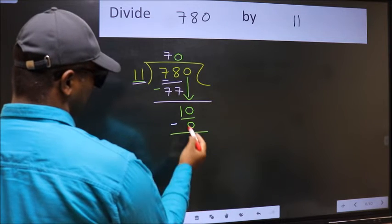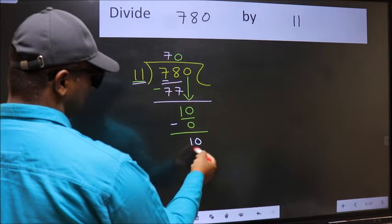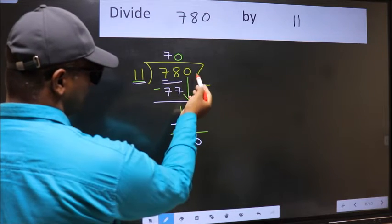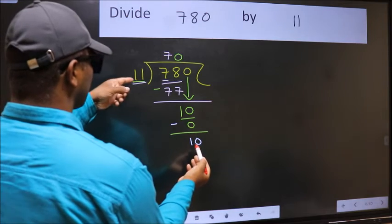Now you should subtract: 10 minus 0 equals 10. Here, we did not bring any number down, and 10 is smaller than 11.